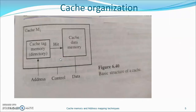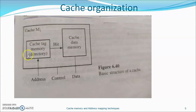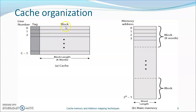Considering the cache organization, the figure shows the principal components of the cache memory. Words are stored in a cache data memory and are grouped into small pages called cache blocks or lines. The contents of the cache data memory are copies of a set of main memory blocks. Each cache block is marked with its block address, referred to as a tag, so the cache knows to what part of the memory space the block belongs. The collection of tag addresses currently assigned to the cache is stored in a special memory called cache tag memory.